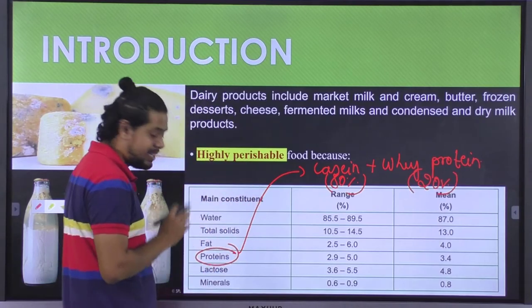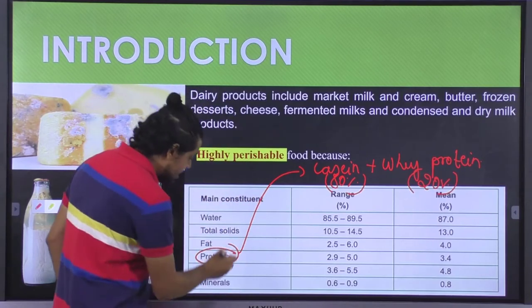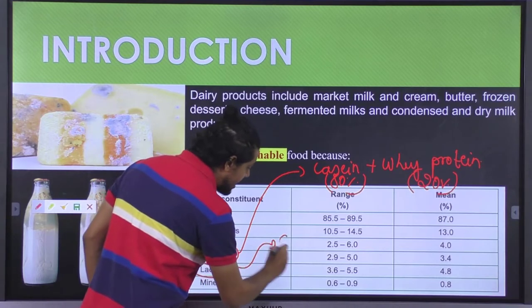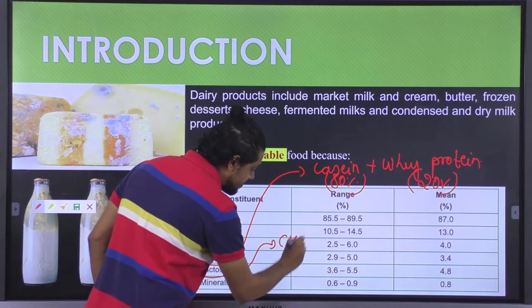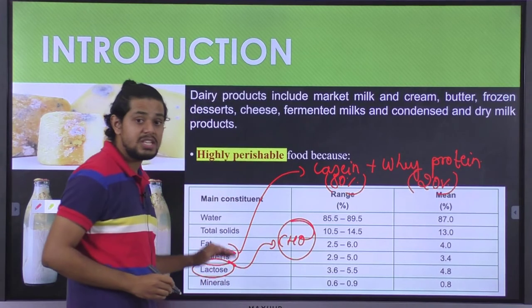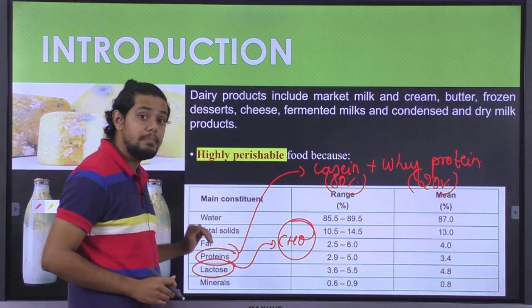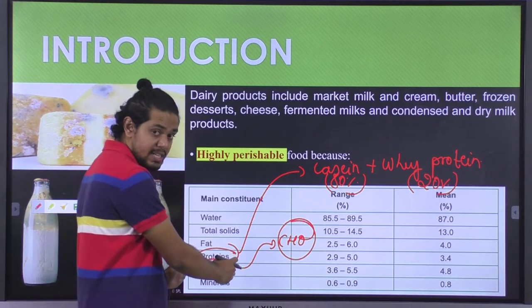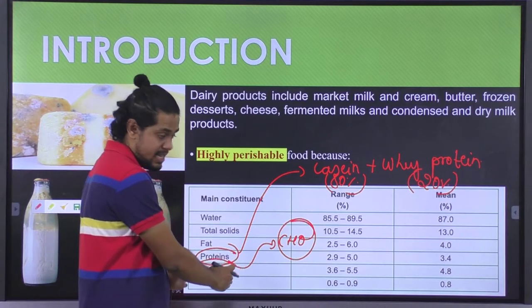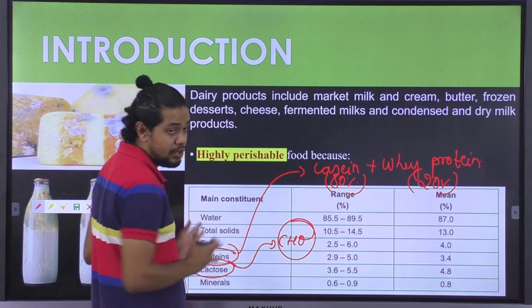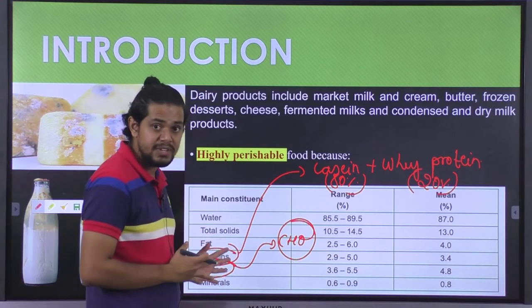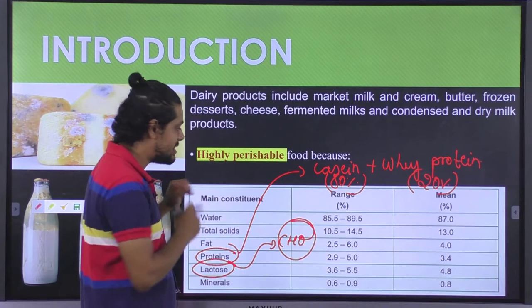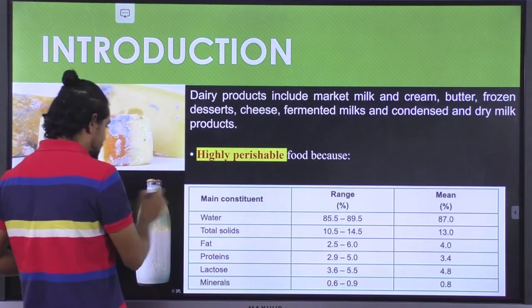Another important thing to note is lactose. Lactose is the chief carbohydrate which is exclusive to milk. That is the carbohydrate source existing in case of milk. This is about the composition of the milk constituents.